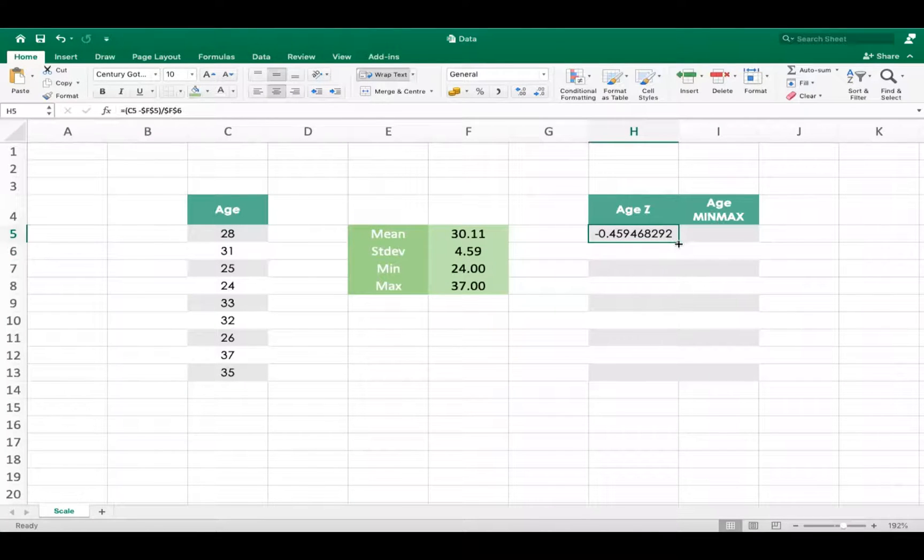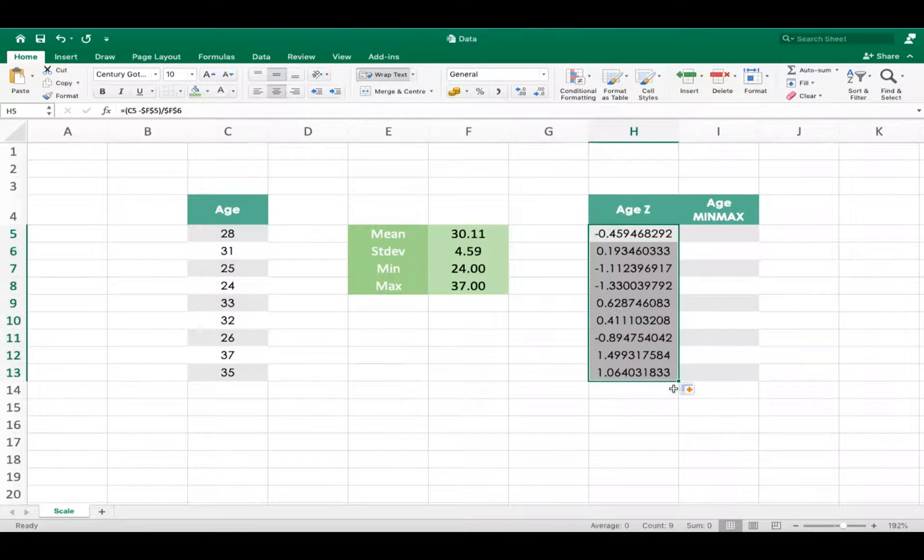This is the scaled value. You can simply drag this for the rest of the cells, and this is your z-scaled age. You might be wondering this looks negative and positive at times. Yes, that is the case, but this is fitting onto a standard normal distribution. So this will always be range bound, and these positives and negatives are to be seen in relative terms. What is the min-max scaling?